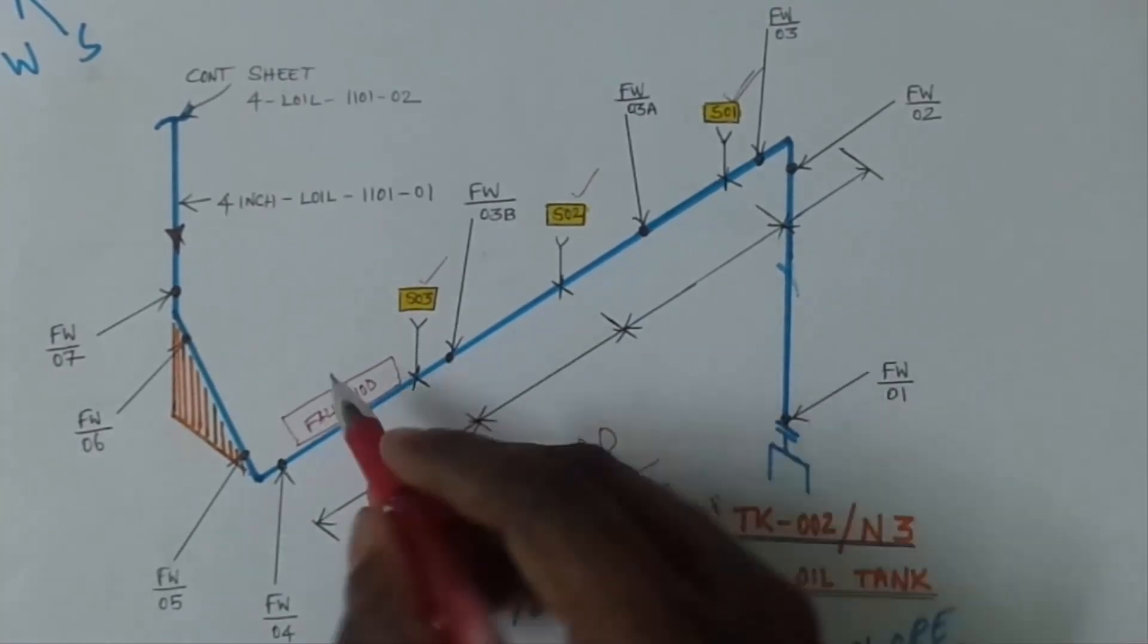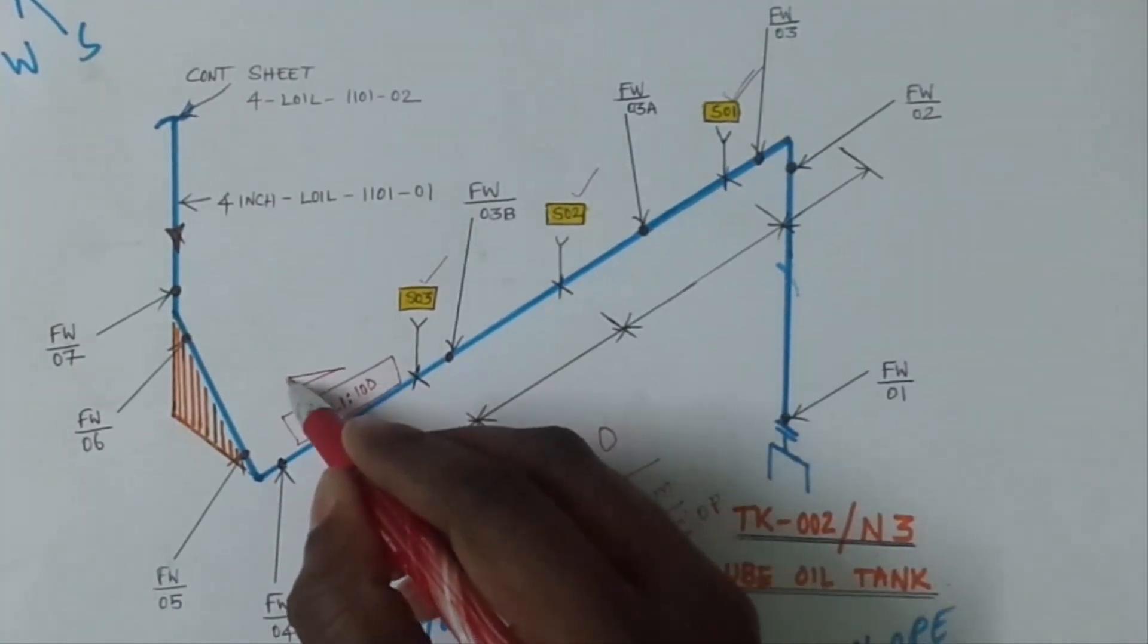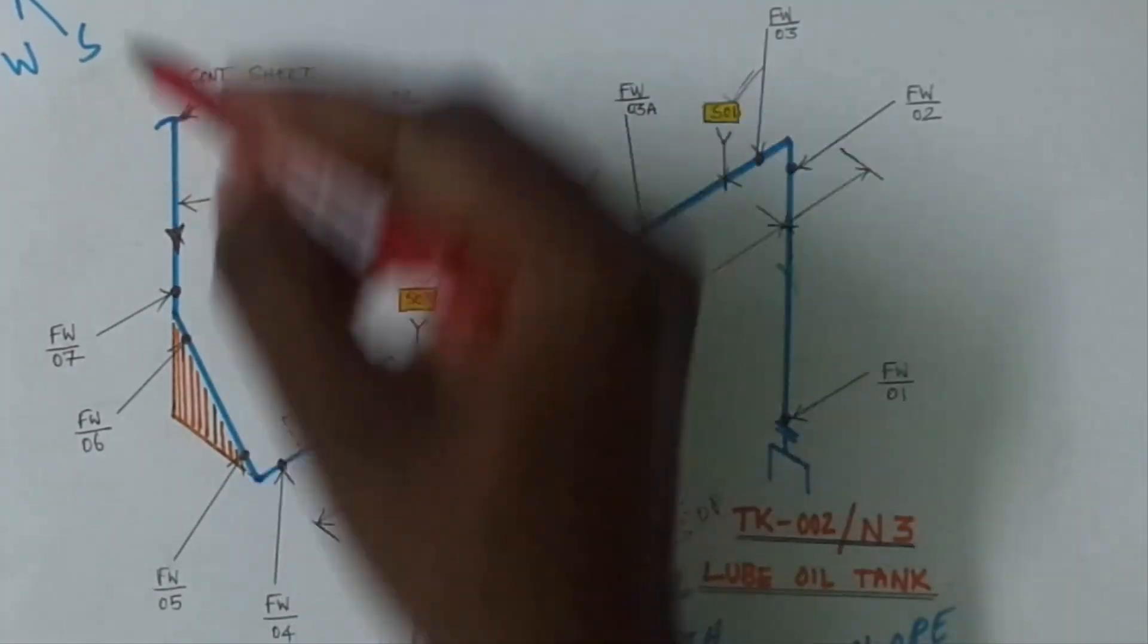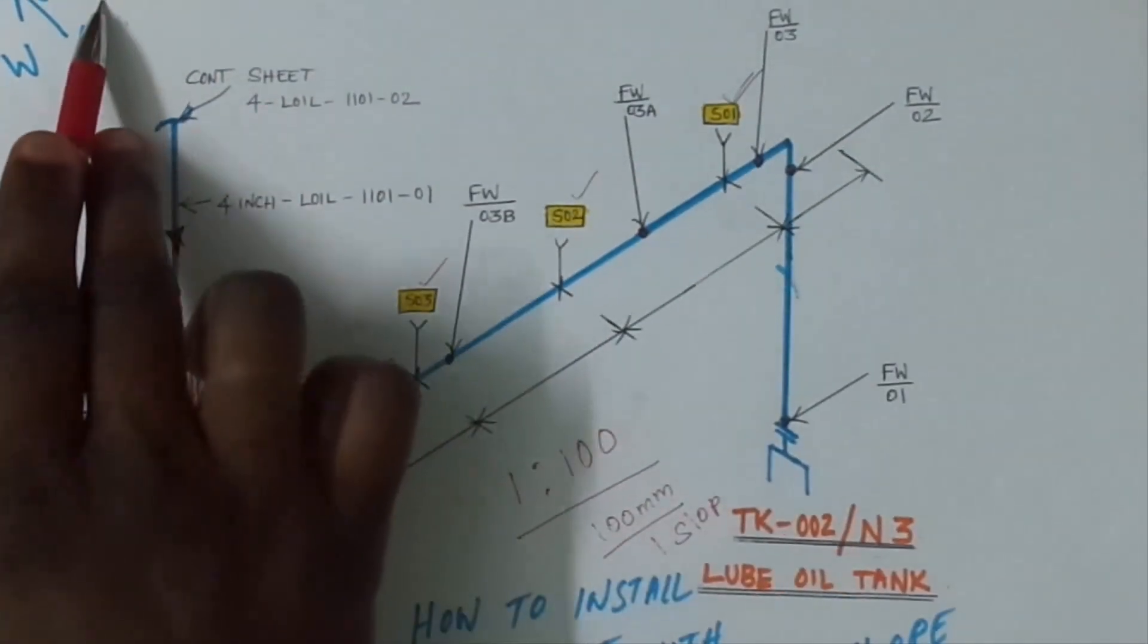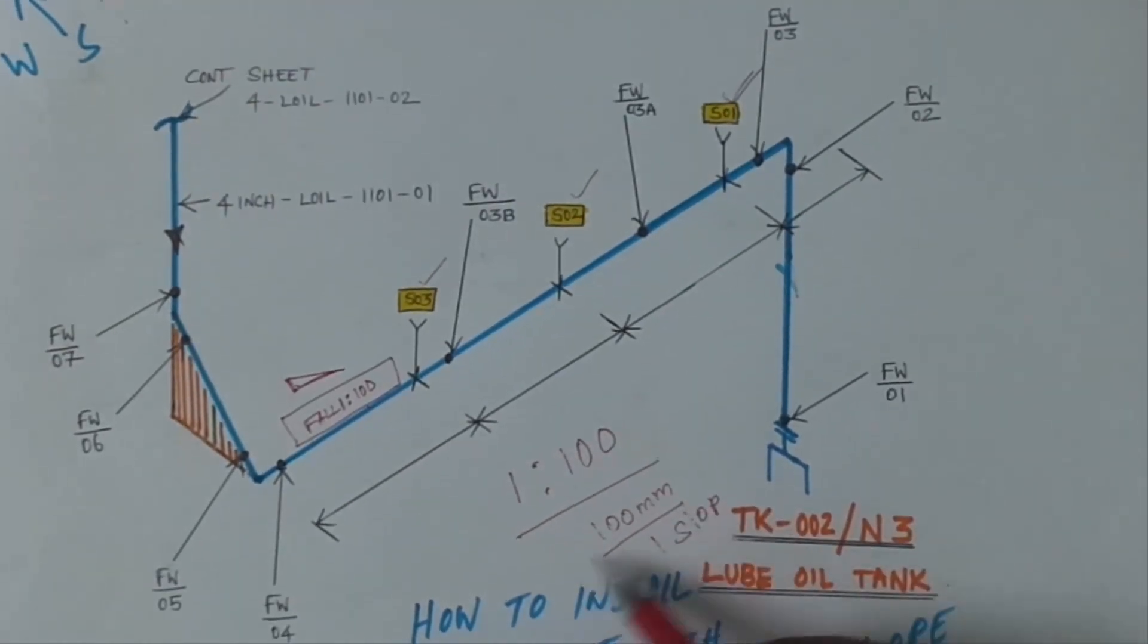And they will give which side also. They will give like that—simple. This slope will be in the east direction. So 1 in 100, every 100 mm we have to give 1 mm slope.